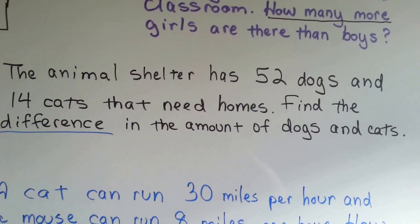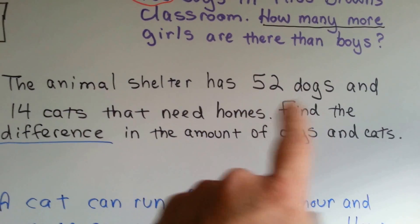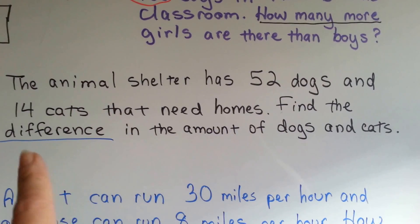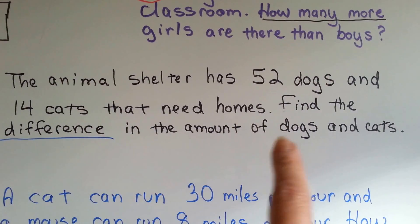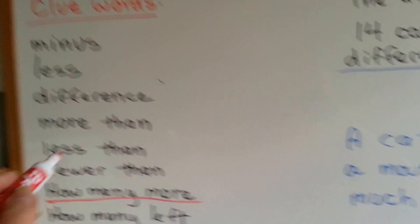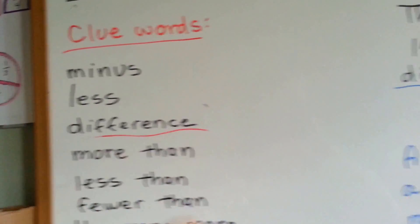Let's try this one. The animal shelter has 52 dogs and 14 cats that need homes. Find the difference in the amount of dogs and cats. Difference is our clue word. It's right here. It's a subtraction clue word.